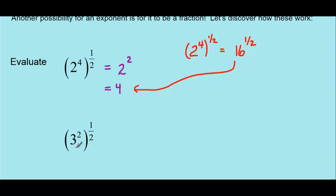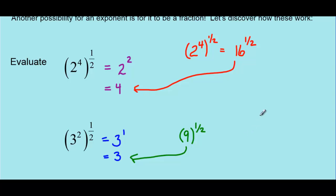Same sort of idea, but this time we have 3 to the exponent 2, then to the exponent 1/2. Multiplying the exponents: 2 times 1/2 is 2/2, or 1. So that's 3 to the exponent 1, which is just 3. Another way to write it: 3 squared is 9, and 9 to the exponent 1/2 somehow equals 3. Hopefully we realize that the mathematical operation is taking a square root. The square root of 16 is 4, and the square root of 9 is 3. So this exponent 1/2 is equivalent to saying take the square root.